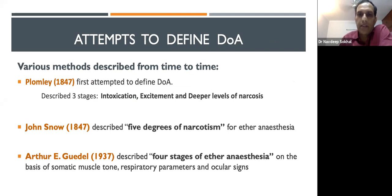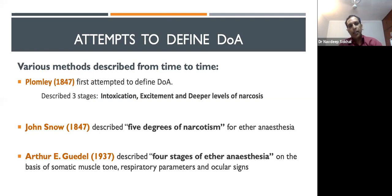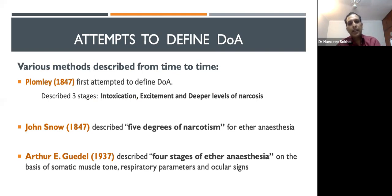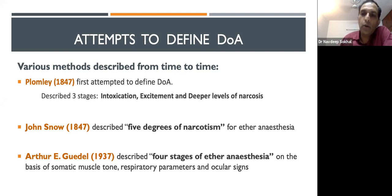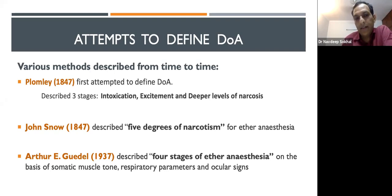Many attempts have been made to define adequate depth of anesthesia. The first was by Promley in 1847, who described anesthesia in three stages: intoxication, excitement, and deeper levels of narcosis. John Snow later described five stages of narcosis for ether anesthesia. Arthur E. Guedel in 1937 described four stages of ether anesthesia based on muscle tone, respiratory parameters, and ocular signs.